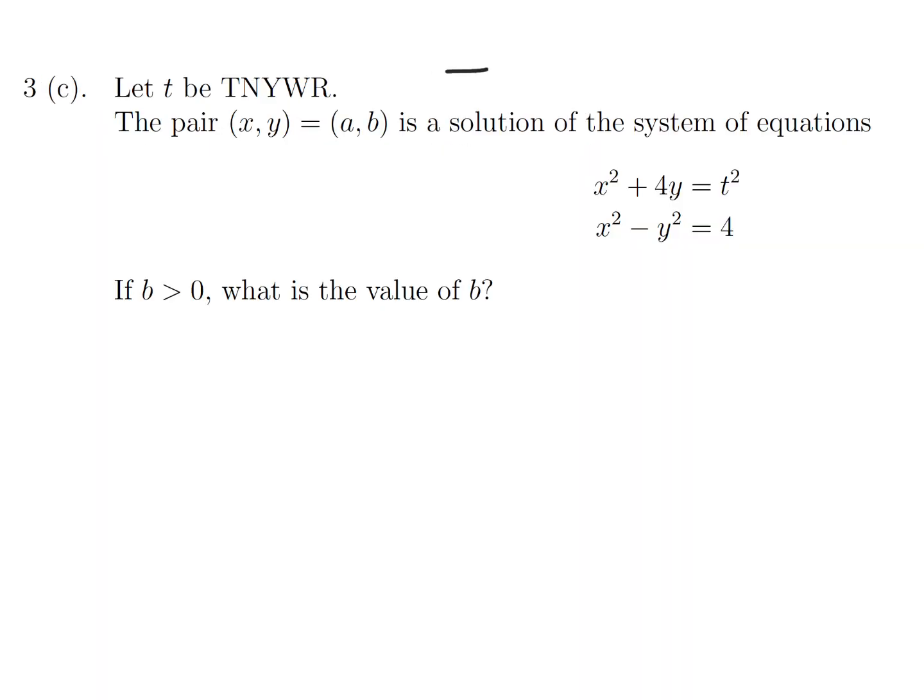Let t, well, t is 16 in this case. The pair (x, y) which equals (a, b) is a solution of the system of equations. x squared plus 4y is t squared, and x squared minus y squared is 4. If b is greater than 0, what is the value of b? Okay, so I guess we have to sub in this guy into these two. So that would be a squared plus 4b is 256, since t is 16. And then a squared minus b squared is 4.